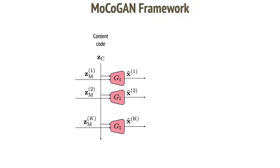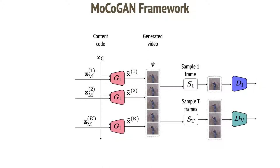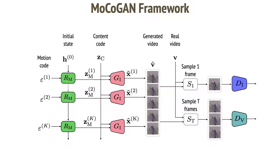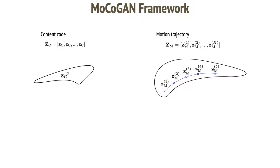I now present the MocoGAN framework. We sample content from a normal distribution. We sample the first motion code and generate an image. We do this multiple times and generate a video. Each frame of this video should be a realistic one. So we sample one frame and discriminate it. A consecutive subsequence of frames should be a good video. So we sample T consecutive frames and use a video discriminator to tell whether they look good. We do the same for real videos to train discriminators. Motion codes are learned using a recurrent neural network with the initial state h0. In this framework, a video is a content code and a motion trajectory.